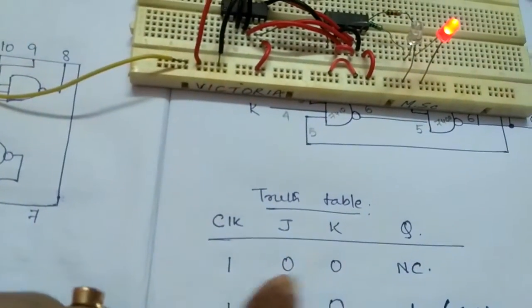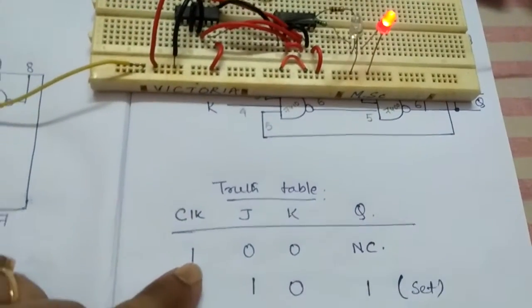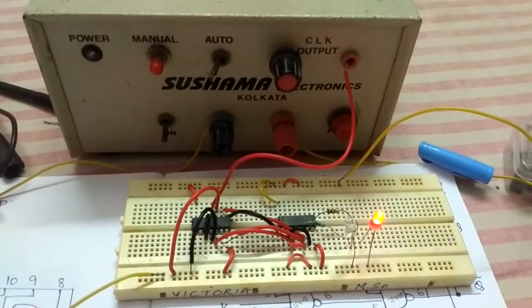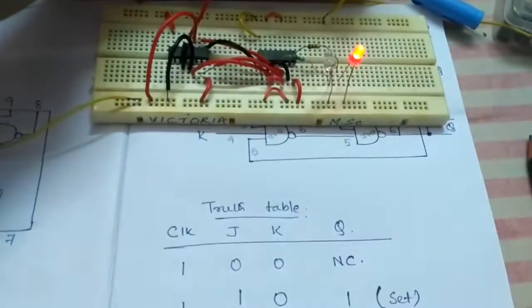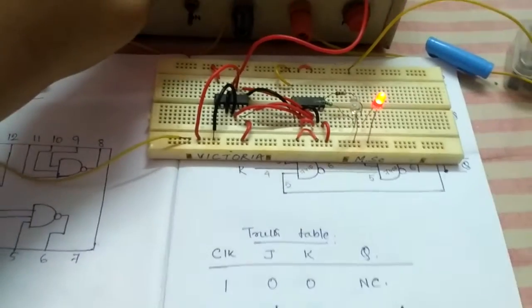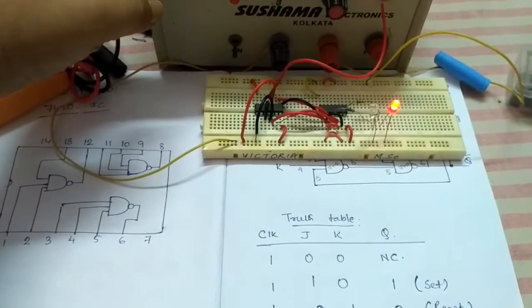I've connected J and K to zero and now I will press the clock pulse. I'm pressing the clock pulse. As per the truth table it will be no change.